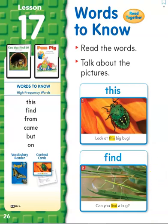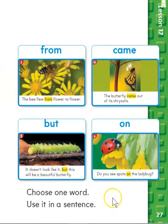Our challenge words for this week are: from, came, but, on. Let's use those in a sentence. The bee flew from flower to flower. The butterfly came out of its chrysalis. It doesn't look like it, but this will be a beautiful butterfly. Do you see spots on the ladybug?